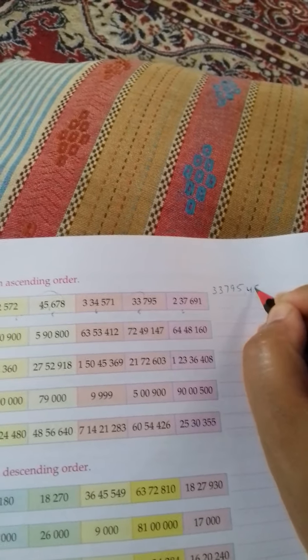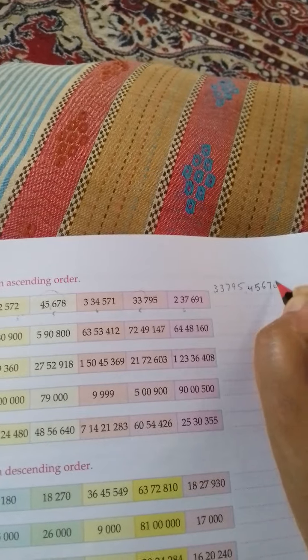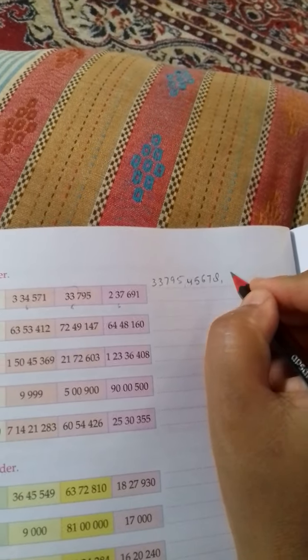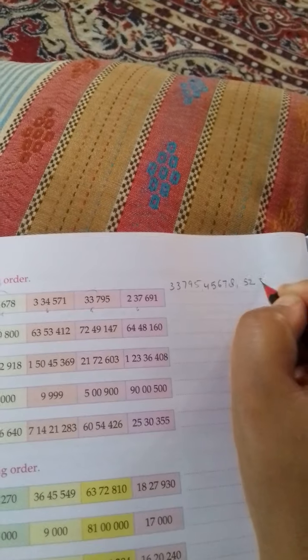And after this, this one: 4, 5, 6, 7, 8. And after this, this one: 5, 2, 5, 7, 2.